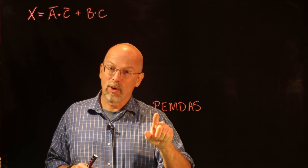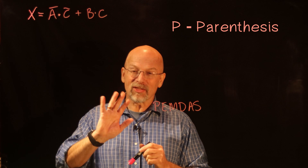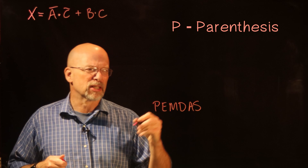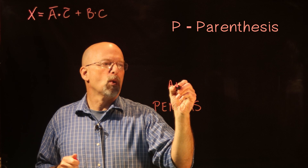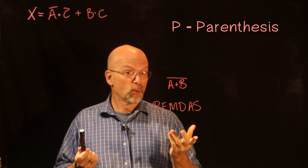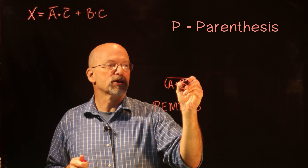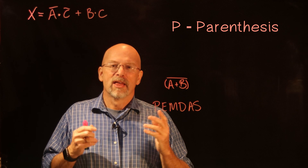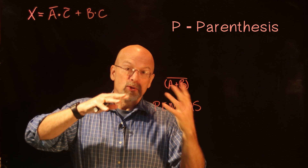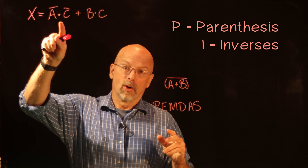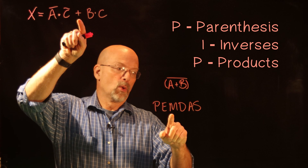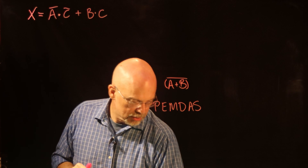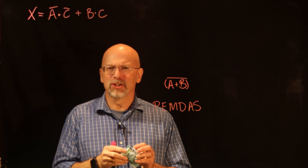We're going to do parentheses first. An interesting thing about the NOT is that everything under the bar is considered to be in parentheses. So if I have A OR B with a bar over both of them, that bar is equivalent to putting parentheses around A OR B — do everything under the bar like parentheses. Then after inverses, you do your ANDs, then your ORs.